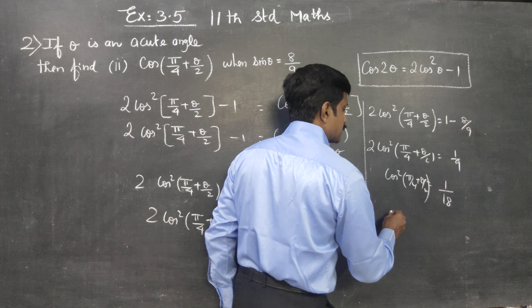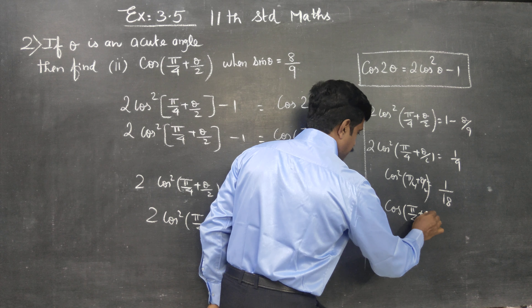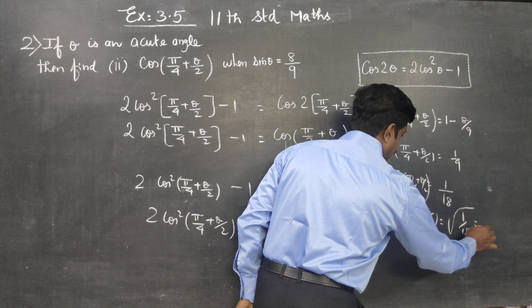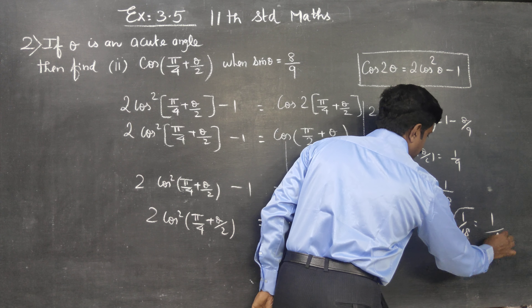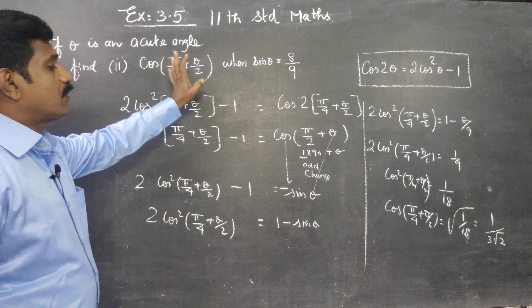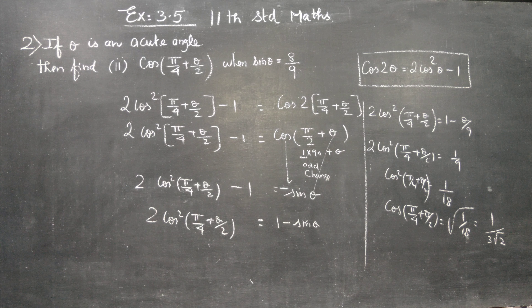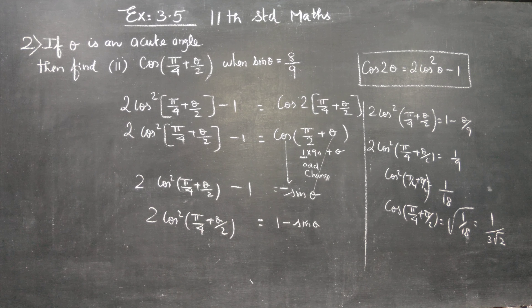So 2 cos square (pi by 4 plus theta by 2) minus 1 equals negative sin theta, which gives 2 cos square (pi by 4 plus theta by 2) equals 1 minus sin theta. Substituting sin theta equals 8 by 9: 1 minus 8 by 9 equals 1 by 9. Dividing by 2, cos square (pi by 4 plus theta by 2) equals 1 by 18.